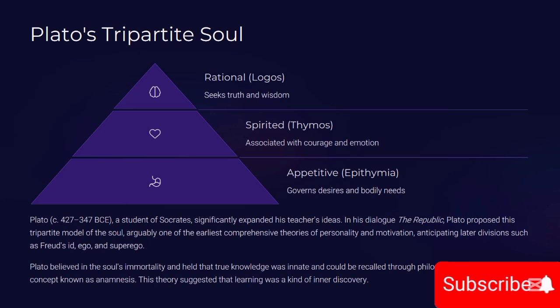Plato (c. 427–347 BCE), a student of Socrates, significantly expanded on his teacher's ideas. In his dialogue The Republic, Plato proposed a tripartite model of the soul: the rational part (logos), which seeks truth and wisdom; the spirited part (timos), associated with courage and emotion; and the appetitive part (epithymia), which governs desires and bodily needs. This model is arguably one of the earliest comprehensive theories of personality and motivation, anticipating later divisions such as Freud's id, ego, and superego. Plato believed in the immortality of the soul and held that true knowledge was innate and could be recalled through philosophical reasoning — a concept known as anamnesis.